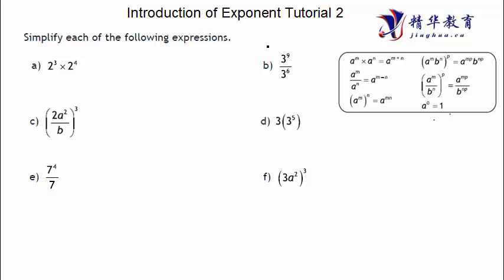Let's see the questions. The first one is pretty simple — two to the power of three times two to the power of four. We have the same base, so we can apply the rule: power times power equals power added together. So it's two to the power of three plus four, which is two to the power of seven.